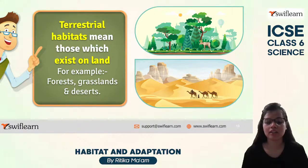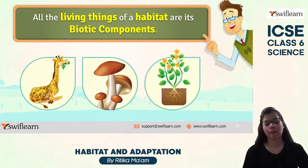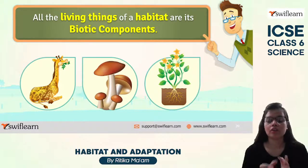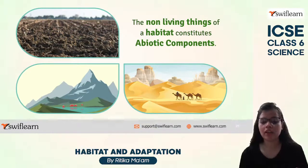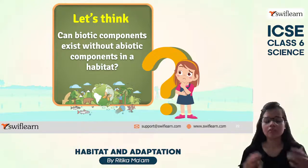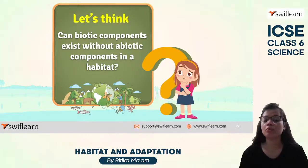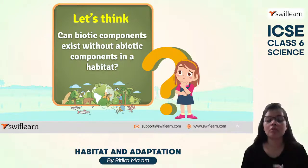Next is terrestrial habitat, which exists on land. Terrestrial habitats include forests, grasslands, deserts, and polar regions. Now, biotic components are all the living things of a habitat — animals, plants — and they are categorized as biotic components. Abiotic components consist of non-living things of a habitat, like soil, mountains, air, and water. Biotic components cannot exist without abiotic components — we cannot survive without air and water, which are abiotic components.